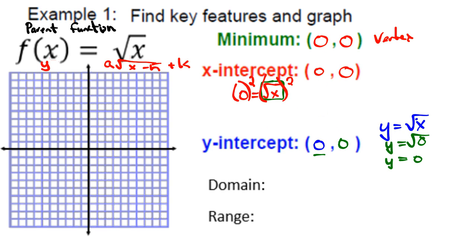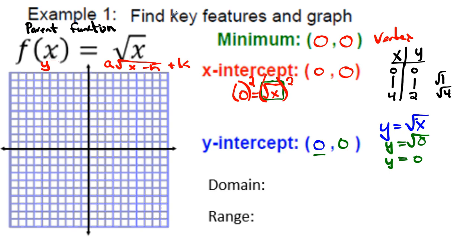For the table, the vertex gives us (0, 0). Plug in x = 1: √1 = 1, giving (1, 1). Plug in x = 4: √4 = 2, giving (4, 2). The pattern goes up one, up three for x-values to get perfect squares. Plot the points — (0,0), (1,1), (4,2) — and the graph shoots off like a sideways rocket.